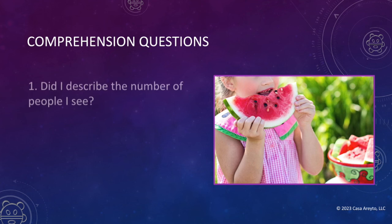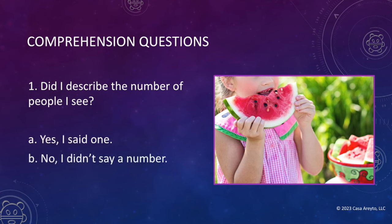The first question is: did I describe the number of people I see? And the possible answers are: yes, I said one; no, I didn't say a number; or no, I didn't describe anyone. So, how do we go about answering that comprehension question? I'm going to take you through a series of strategies that you can use. The first thing we want to do is go back to our text and find out if we see a number — any number at all. Let's do that first and then we'll be able to answer the question.